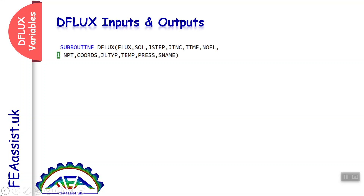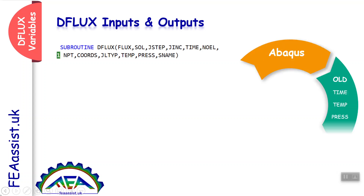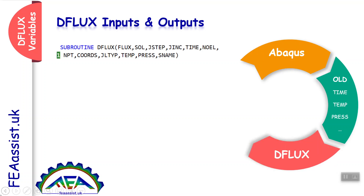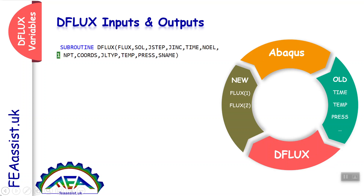DFLUX has some inputs. We need to process those inputs and export them as outputs into Abacus. Abacus computes time, temperature, pressure, and other variables. We get these variables, write our fluxes — flux 1 and flux 2 — and return them back to Abacus. Abacus then gets flux 1 and flux 2 and computes the new variables: time, temperature, pressure, and other variables. This is how Abacus and DFLUX interact with each other.